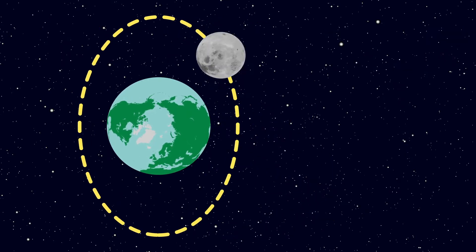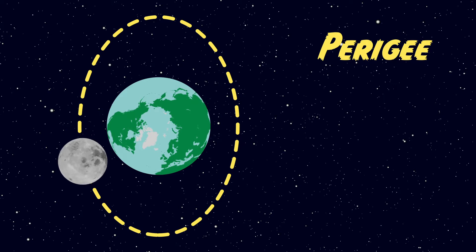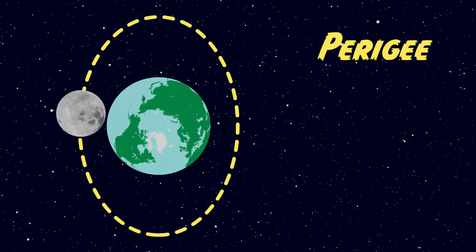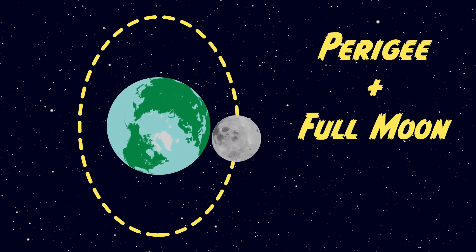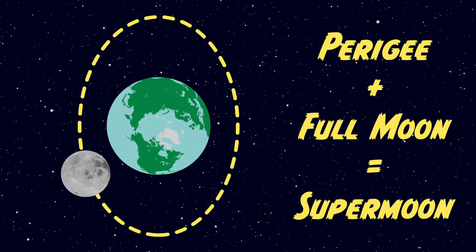When the moon is closest to the earth it's said to be at its perigee. At its perigee the moon will appear its largest in the sky because it's closest to the earth. When the perigee lines up with the full moon, this is called a supermoon because it's the biggest the moon will look.